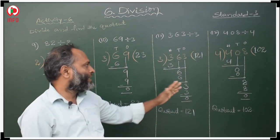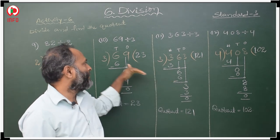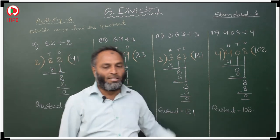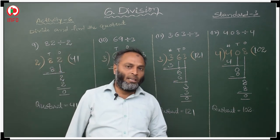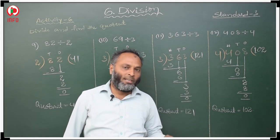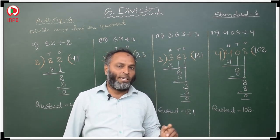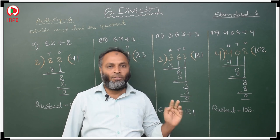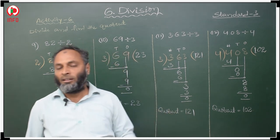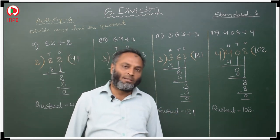When 3-digit numbers are given, we do like this. When 2-digit numbers are given, we do like this. In this activity, questions 5th, 6th, 7th, and 8th — those 4 similar questions, do as your home assignment. Okay, students.